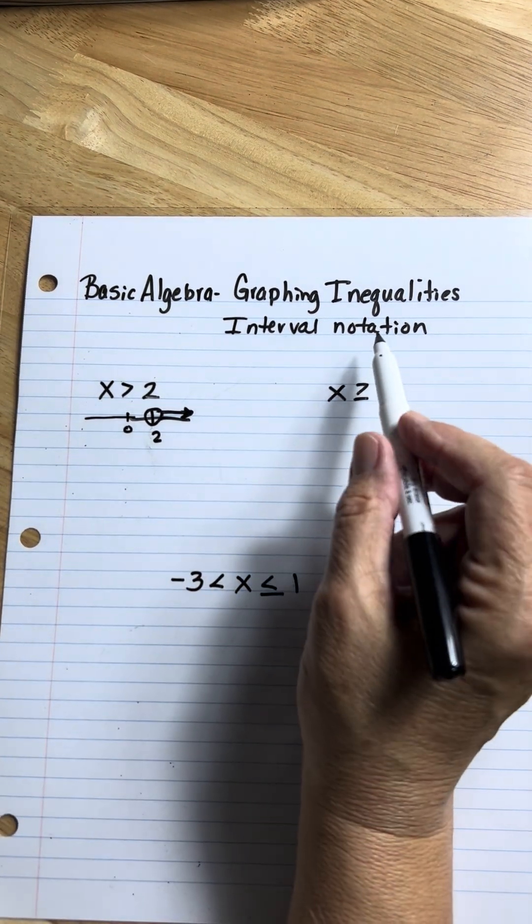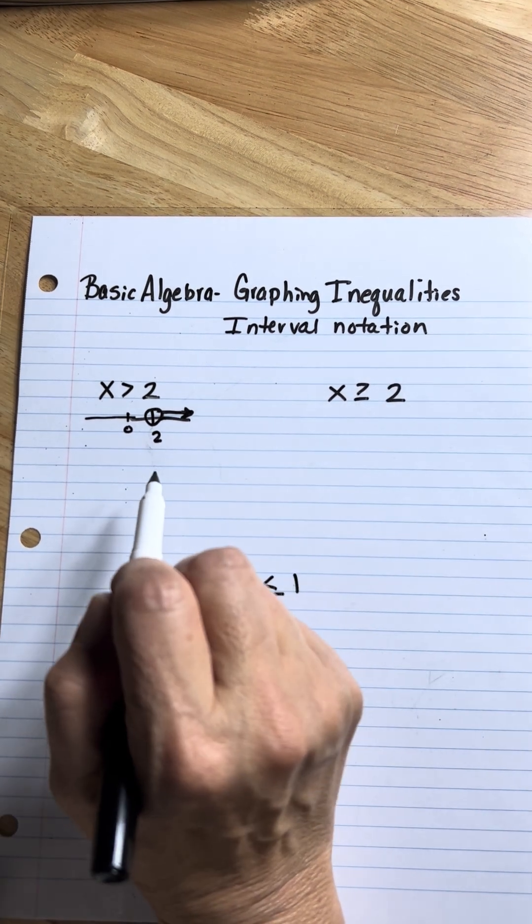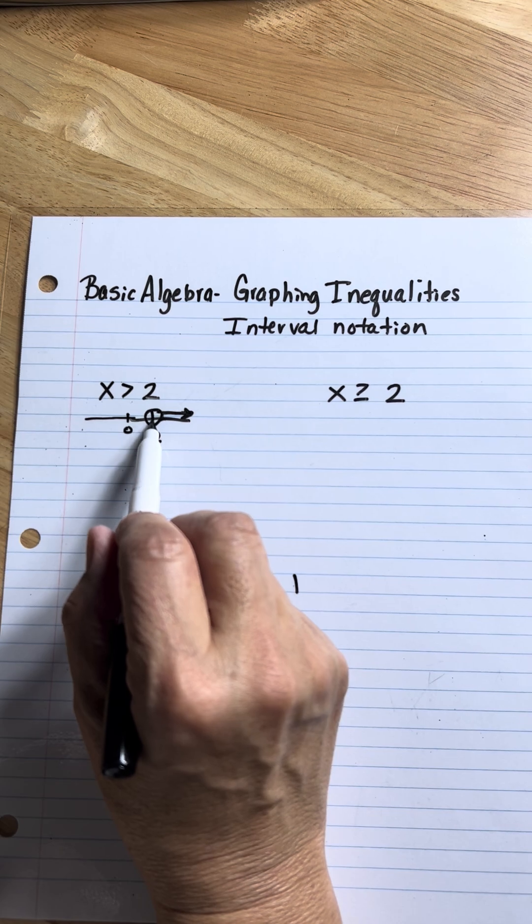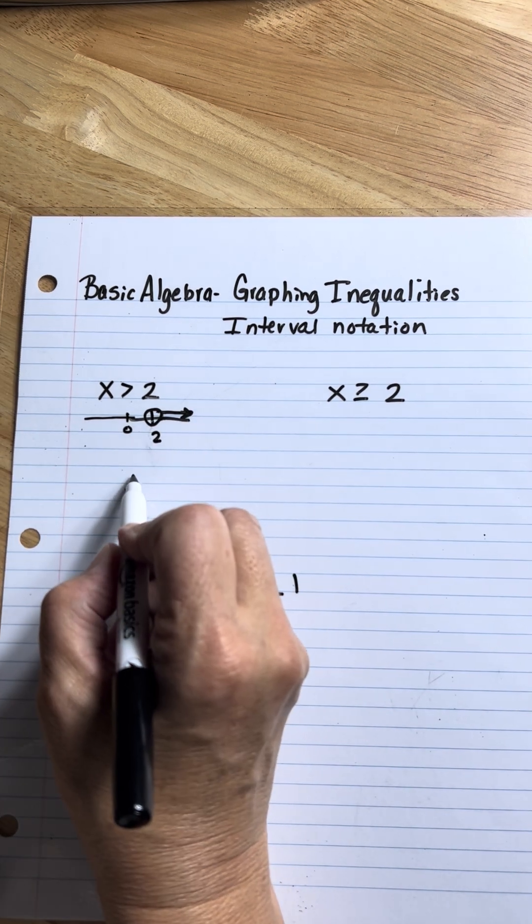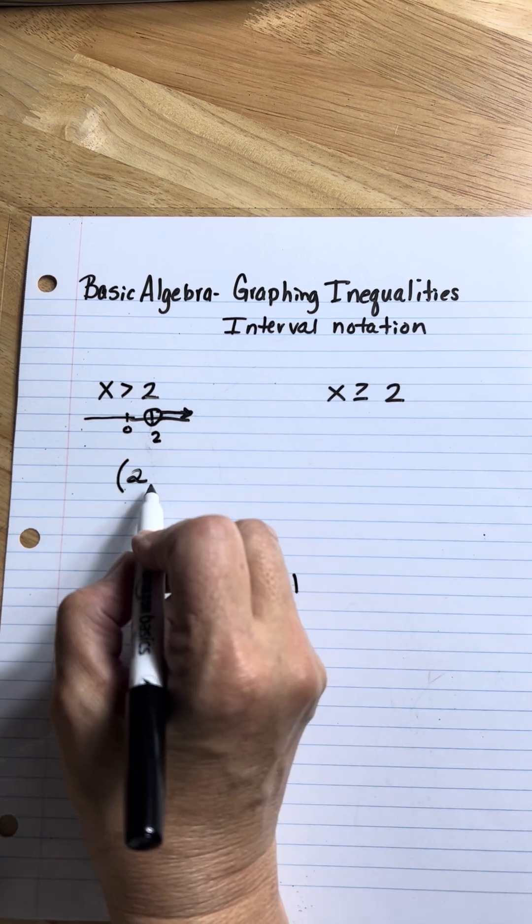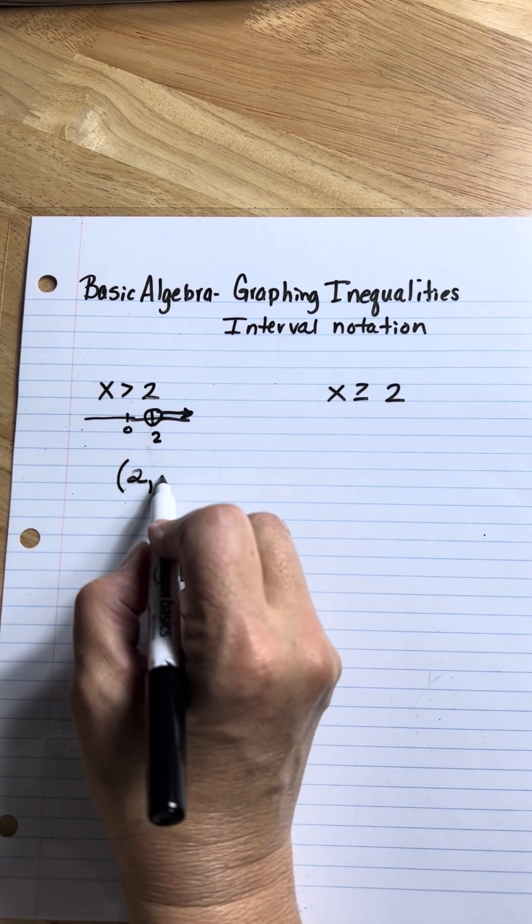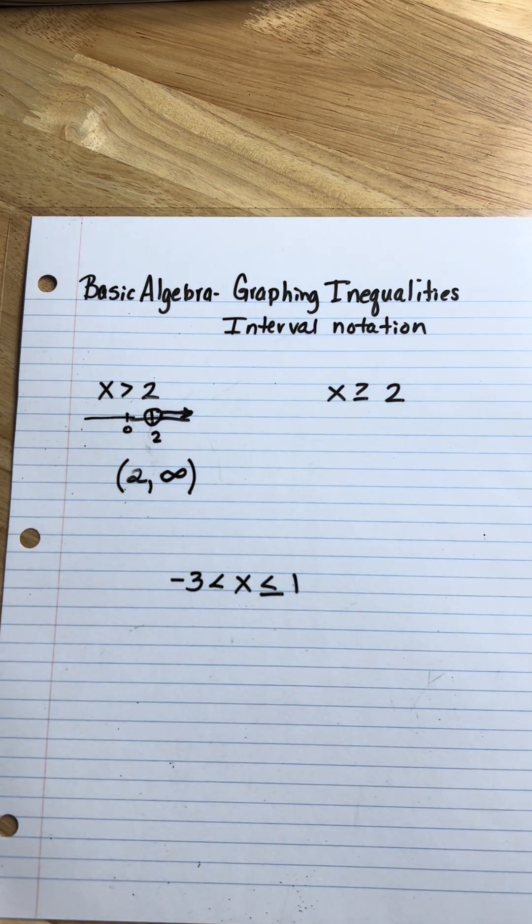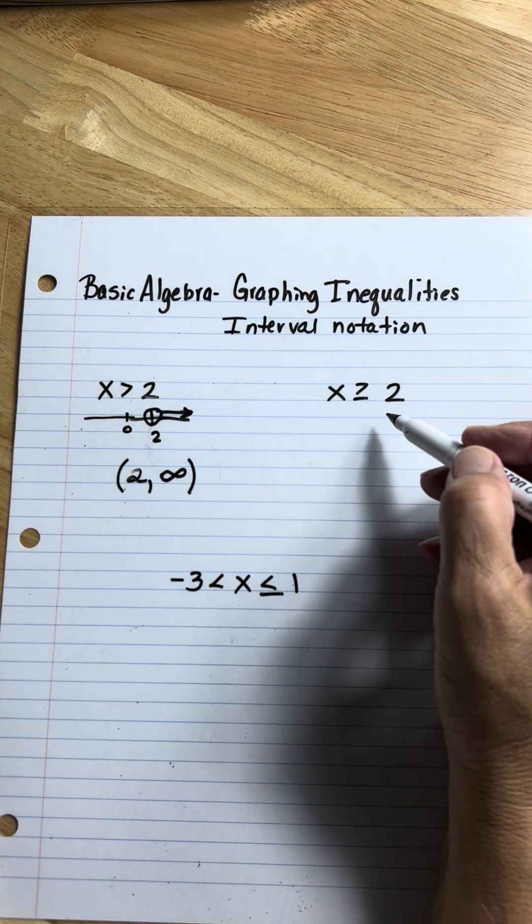Now, how would you write that in interval notation? An interval has two numbers, the left side and the right side. What number is on the left end of this line? Well, it's a two, but since it's an open circle, you use the parentheses. On the other side, it's going to positive infinity, and you always use a parentheses with infinity.